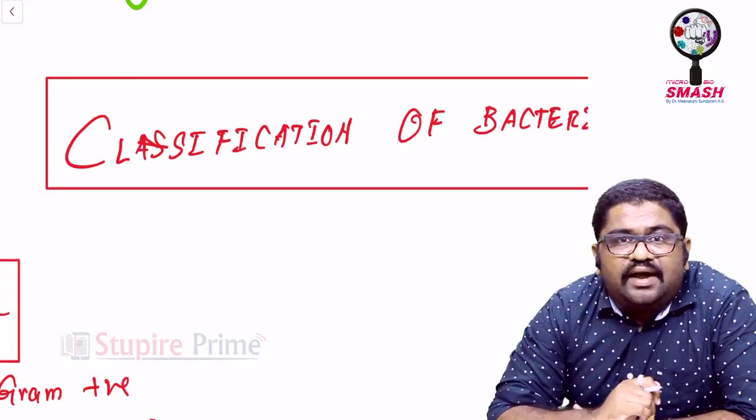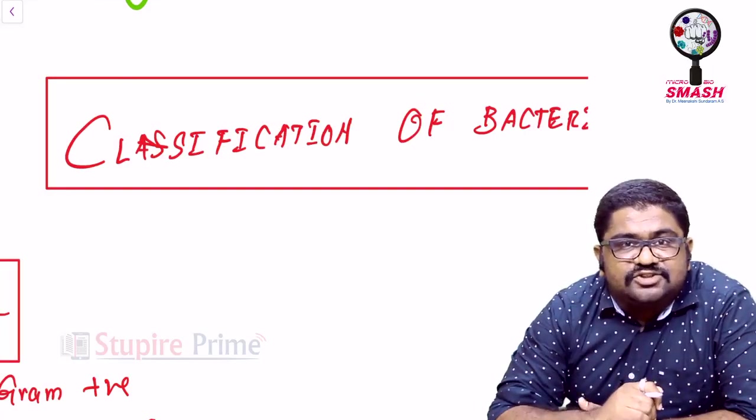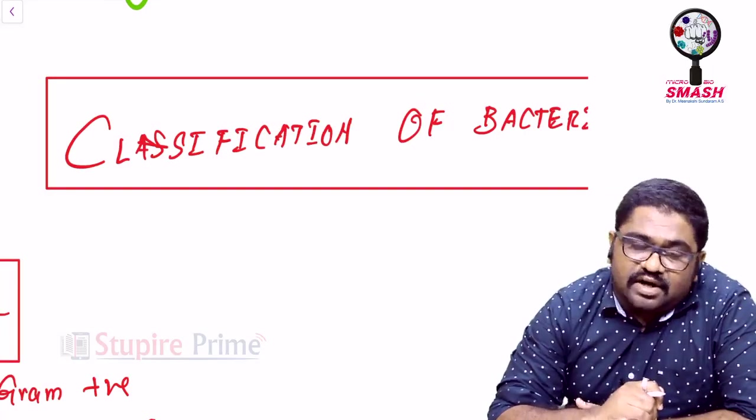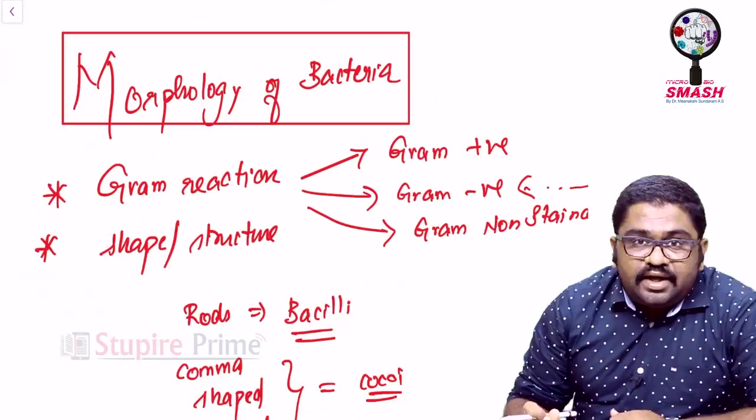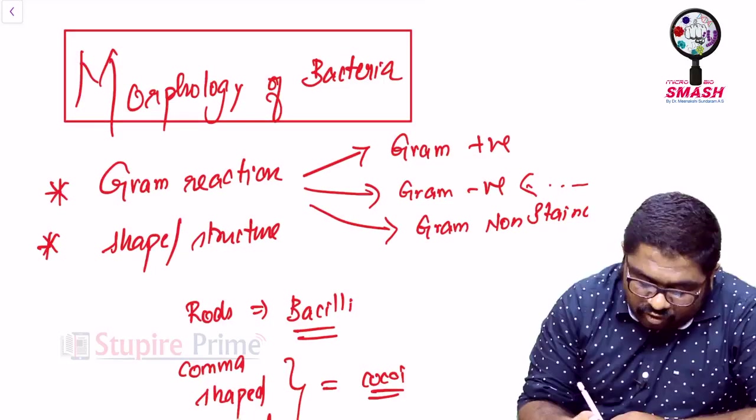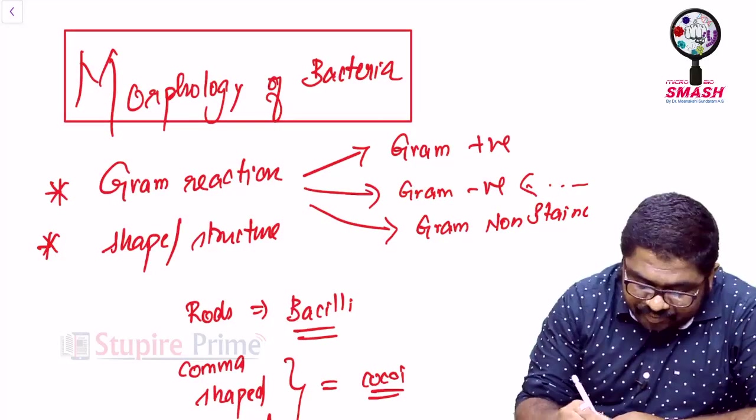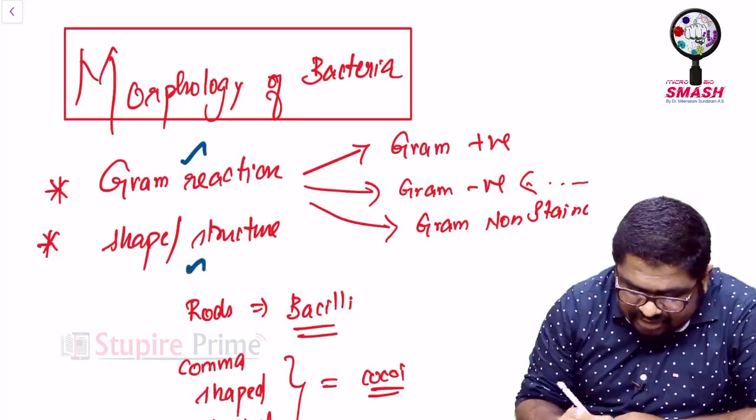Some bacteria can be aerobic, anaerobic. They can be intracellular, extracellular, flagellated, non-flagellated, gram-positive, gram-negative, etc. So, we start with the first concept here. In terms of morphology, we look for gram-reaction and we look for shape and structure.